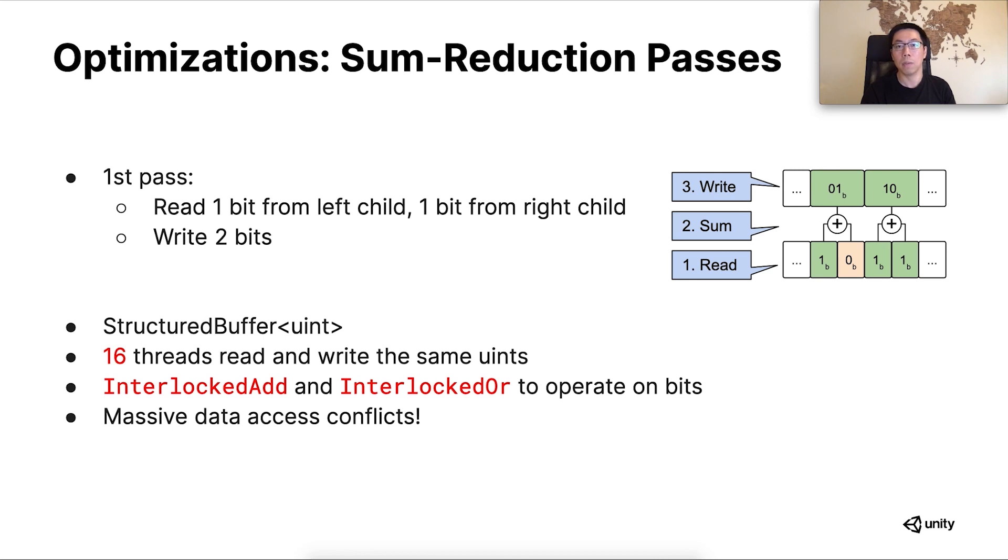Now, let's take a deeper look at the code. What exactly does the compute shader do in this pass? The first sum reduction pass by its definition counts the two bits from the left and right child nodes of each level 2 parent node, sums them up to either 0, 1, or 2, and writes these two-bit integers sequentially back in the buffer. The subsequent passes do exactly the same, only they operate on one-bit wider data at each level from bottom up.